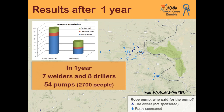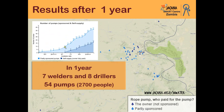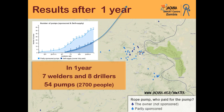This graphic shows the partly sponsored pumps over time — in one year, 37 pumps were partly sponsored. The dark blue line shows the self-supply pumps, meaning pumps bought without any sponsorship. If we stopped the sponsor program after one year, the self-supply pumps would continue growing, meaning the output of the program would continue growing even without putting any more money into it. I'm not saying we should stop sponsoring entirely, because in very rural areas people still have little money, and I think it's only fair to help them a little bit with sponsorship.